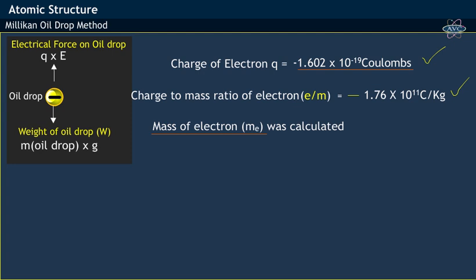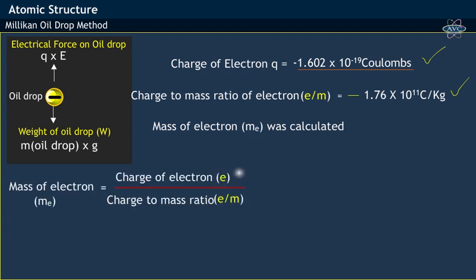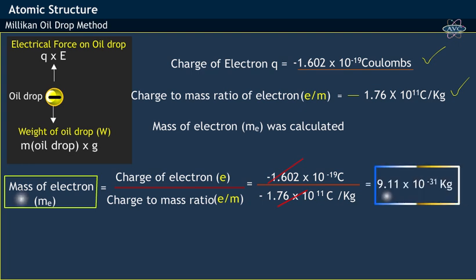On substituting these values in the equation e divided by e/m, we get −1.602 × 10⁻¹⁹, divided by the value 1.76 × 10¹¹. This equation, on further calculation, the mass of electron was found to have a value of 9.11 × 10⁻³¹ kg.